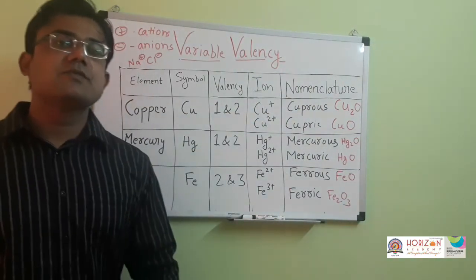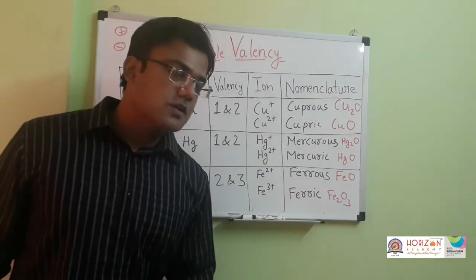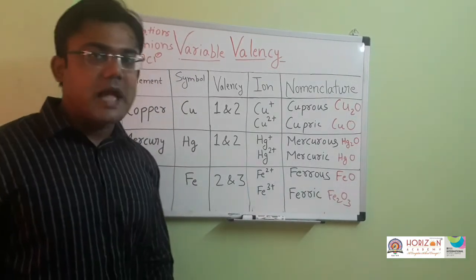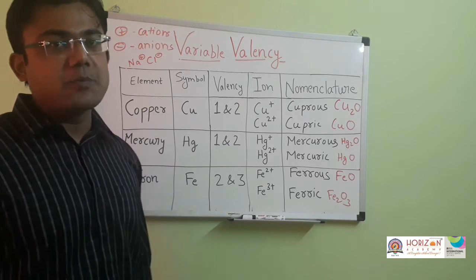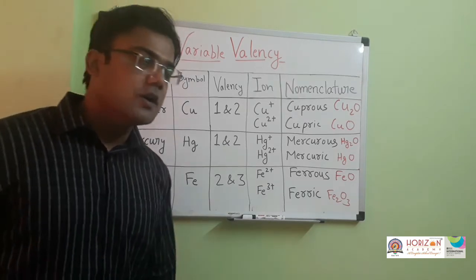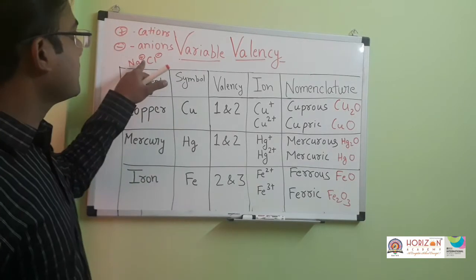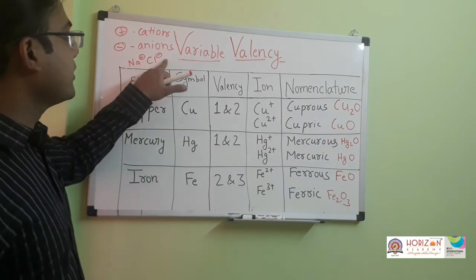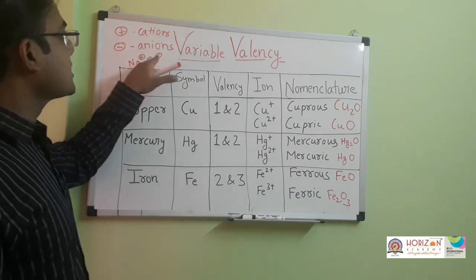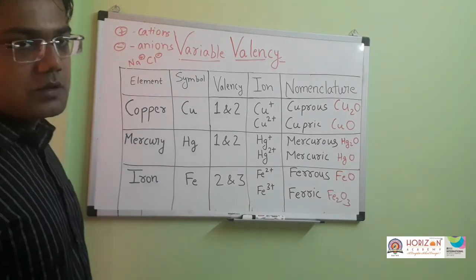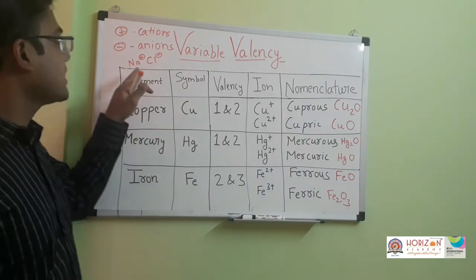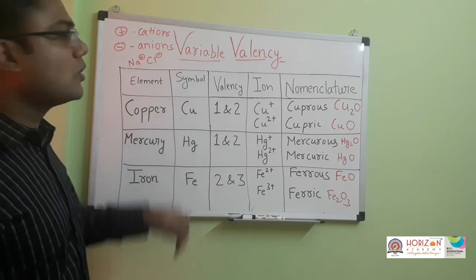Let us start the next topic: variable valency. First, you should know what ionic compounds and ions are. Ionic compounds are compounds formed by combination of different ions or which have ionic bonds. For example, in NaCl there is one positive and one negative charge. Positive charged ions are known as cations and negative charged ions are known as anions. Na has fixed valency because it can lose only one electron, forming Na plus, and Cl also has fixed valency.